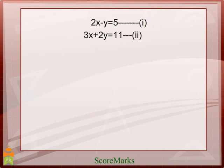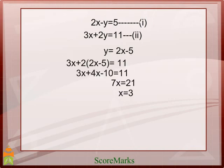From the first equation, we take out the value of y. That is, y is equal to 2x minus 5. And substitute it in the second equation in place of y.